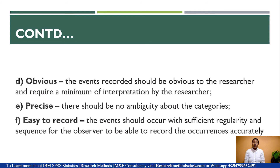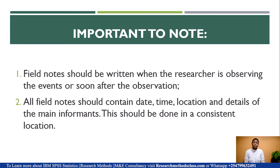Fourth, obvious — the events recorded should be obvious to the researcher and require a minimum of interpretation. Fifth, precise — there should be no ambiguity about the categories of events being observed. Finally, easy to record — the events should occur with sufficient regularity and sequence for the observer to be able to record the occurrences accurately. It is important to note that field notes should be written when the researcher is observing the events or soon after the observation.